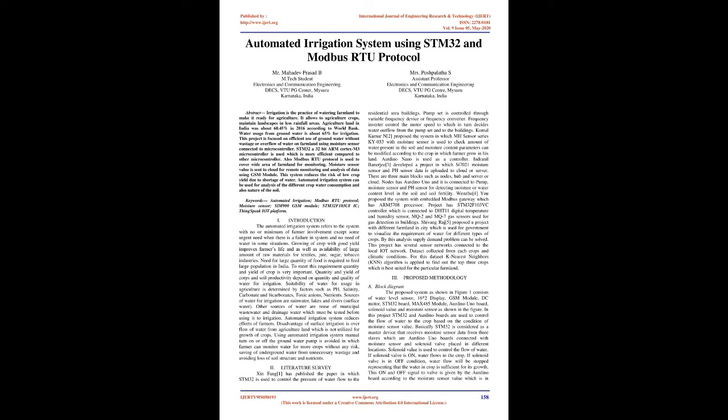Other sources of water are reuse of municipal wastewater and drainage water, which must be tested before using for irrigation. Automated irrigation systems reduce the efforts of farmers. A disadvantage of surface irrigation is overflow of water from agricultural land not utilized for crop growth. Using an automated irrigation system, manually turning on or off the groundwater pump is avoided, allowing farmers to monitor water for more crops without risk, saving underground water from unnecessary wastage, and avoiding loss of soil structure and nutrients.